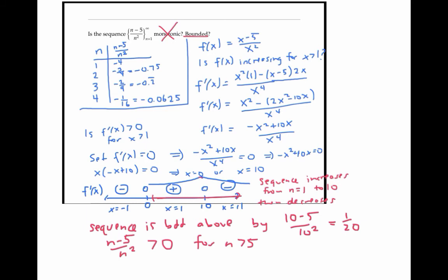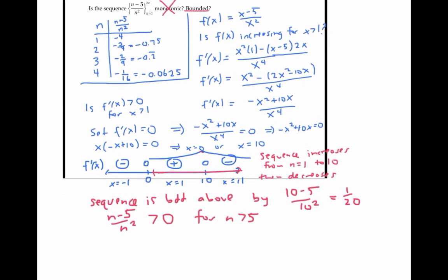And since there are only finitely many terms where n is less than five, we can just use the minimum of these terms and zero as a lower bound. The smallest of the first four terms is negative four, which is less than zero. So that negative four forms a lower bound.